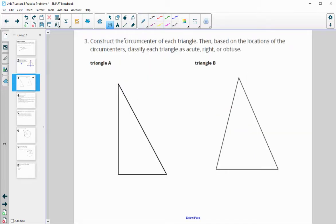Number three, construct the circumcenter of each triangle. Then, based on the locations of the circumcenter, classify it as acute, right, or obtuse. Remember that we learned that the circumcenters in an acute triangle intersect inside the triangle.